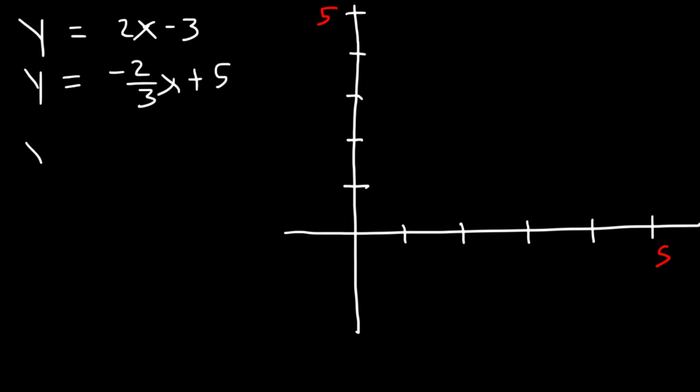Now, each of these equations is in slope-intercept form. Starting with the first equation, we can see that m, the slope, is 2, and the y-intercept is negative 3. So we need to go down at least 3 units. For the first equation, the y-intercept is negative 3. That's going to be the first point.